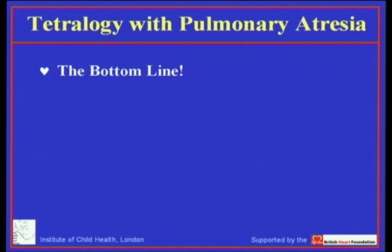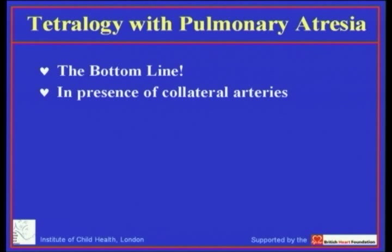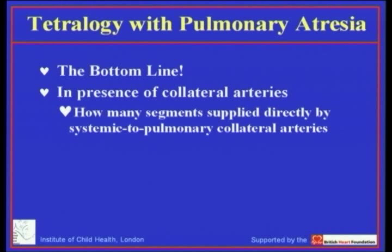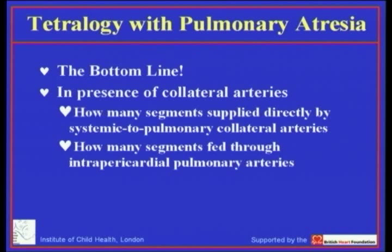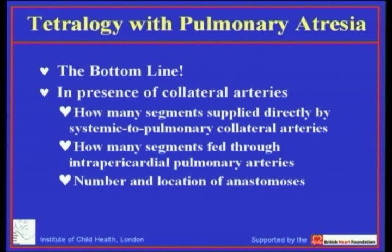In summary, tetralogy with pulmonary atresia is one subset of patients having pulmonary atresia with ventricular septal defect. The most interesting and important patients within this subset are those with collateral arteries. The key diagnostic task is to determine how many segments are supplied directly by collateral arteries versus how many are fed through the intrapericardial pulmonary arterial tree, because this determination dictates the therapeutic approach. Additionally, one must determine the number and location of anastomoses between the collateral pathways and the intrapericardial pathways.